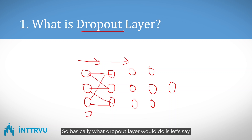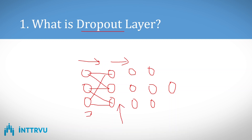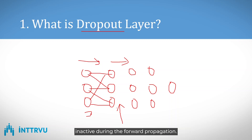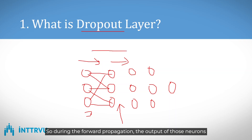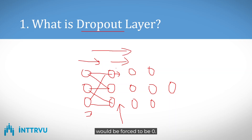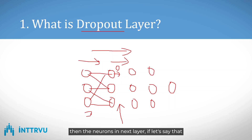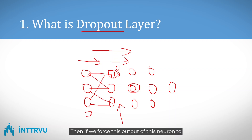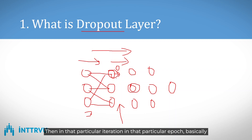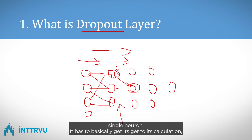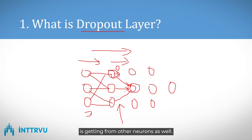What a dropout layer does is it makes the neurons of the previous layer inactive during forward propagation — the output of those neurons is forced to zero. This helps avoid overfitting because if a neuron in the next layer is predominantly dependent on the output of one particular neuron, forcing that output to zero means it cannot depend on just that single neuron. It has to get its feature values from other neurons as well.